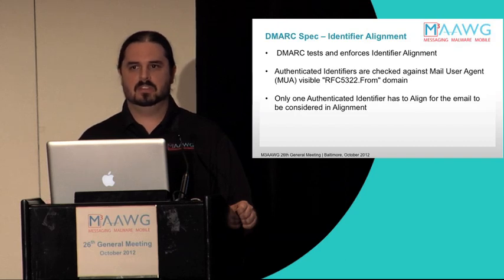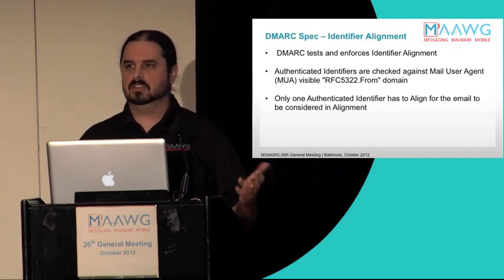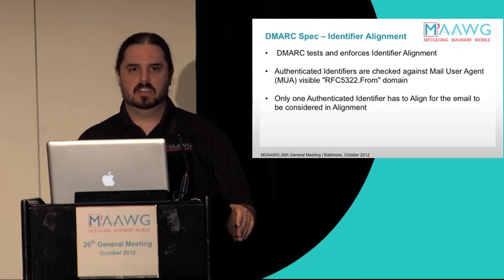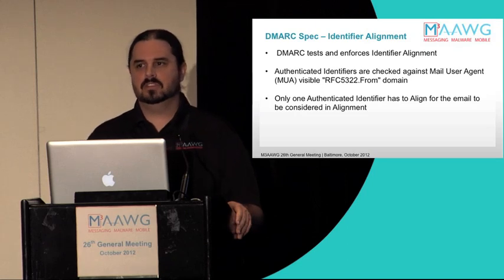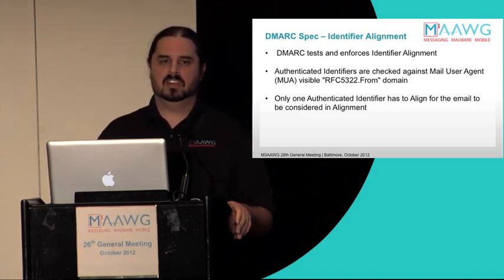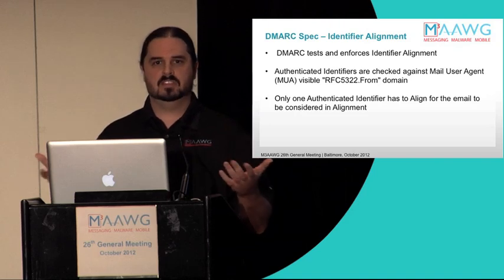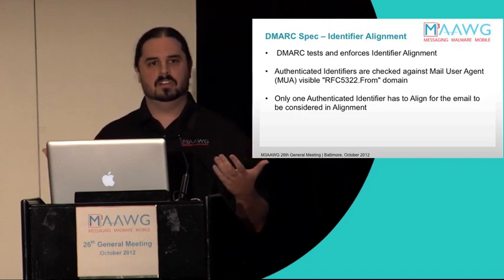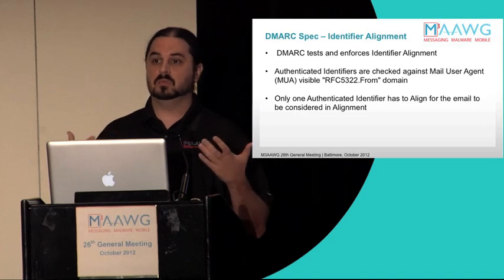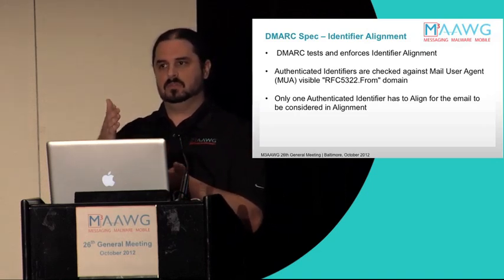SPF concerns itself with the domain given in the MAIL FROM command, but users never see that. DKIM can be any domain that signs it, and an email can have multiple DKIM signatures. So we felt it was important to pull everything back to the domain we are showing to users as being where this mail is actually from, because that's what most users go off of and what most MUAs show the user. So everything has to align to that domain.